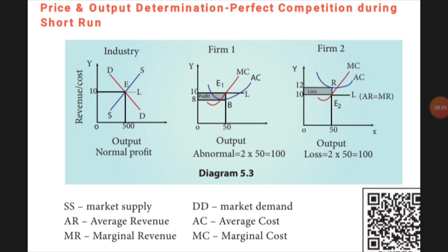For the third diagram, the price line curve is up and MR is equal to MC. Here, my expense is 600 rupees but my income is only 500 rupees. So in the third diagram, I am getting a loss. In summary: the second diagram gives more profit, and the third diagram gives a loss.